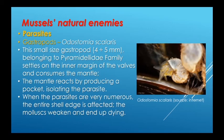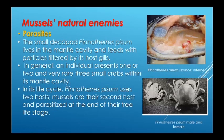Other parasites are gastropods. For example, Odostomia scalaris, a small-sized gastropod belonging to the Pyramidellidae family, settles on the inner margin of the valves and consumes the mantle. The mantle reacts by producing a pocket isolating the parasite. When parasites are very numerous, the entire shell edge is affected and the mollusc weakens and dies. The small decapod Pinnotheres pisum lives in the mantle cavity and feeds on particles filtered by its host's gills. Generally, an individual presents one or two — and very rarely three — small crabs within its mantle cavity. Pinnotheres pisum uses two hosts in its life cycle, with mussels being the second host at the end of their three life stages.